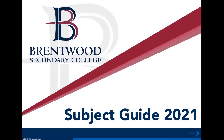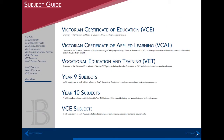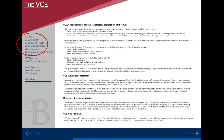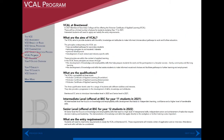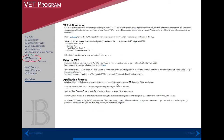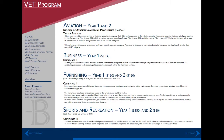This guide covers information about our senior education pathways including VCE, VET and VCAL. The first part covers important information and guidelines that all students must comply with if they are studying the Victorian Certificate of Education, otherwise known as VCE. The second part is an introduction to the Victorian Certificate of Applied Learning, VCAL, that will be offered at Brentwood starting in 2021. The third part covers the Vocational Education and Training program, VET, and provides a list of VET subjects currently offered on site at Brentwood.